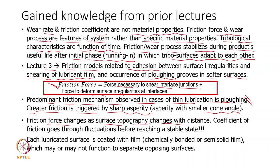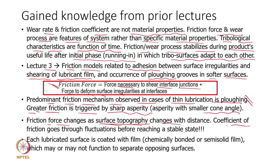Because of these changes, there will be a change in surface topography. As surfaces come into contact and slide against each other, surface topography changes — for example, after 1000 cycles the surface roughness may become half the initial value. The coefficient of friction will go through fluctuations before reaching a more stable state. We will not achieve a perfectly constant value, but much lesser variation will be achieved as peak asperities are deformed elastically, plastically, or removed from the surface.